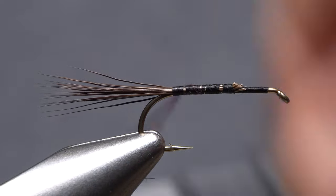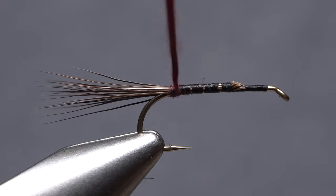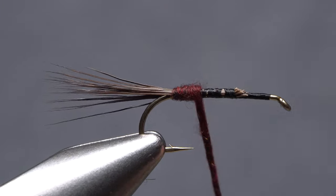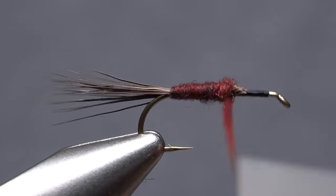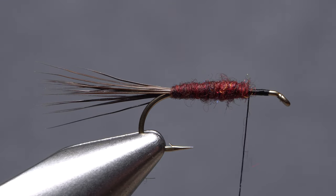Start taking wraps with the noodle so the dubbing begins right at the base of the tail. Keep making touching wraps up the hook shank to create a nicely tapered body on the fly that ends a full 2 eye lengths behind the back edge of the hook eye.